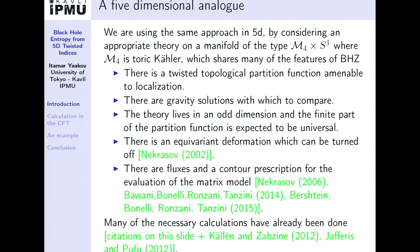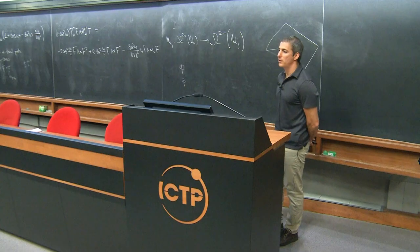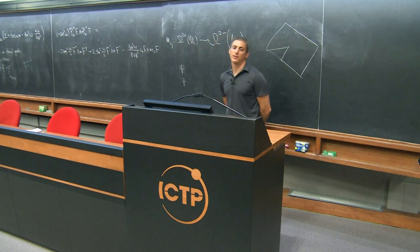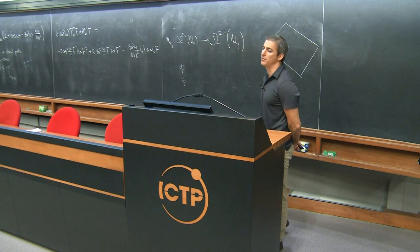What I'm going to introduce is a 5D analog of the same type of calculation, sticking as closely as I can to the things that made the three-dimensional calculation successful. I'm going to consider an appropriate theory. In five dimensions, I need at least N=1 supersymmetry, so I'll consider something on a manifold of the type M4 times S1, and I'm going to choose M4 to be Toric-Kahler.